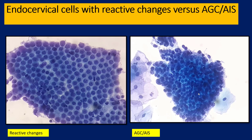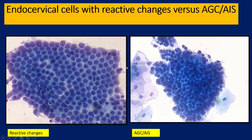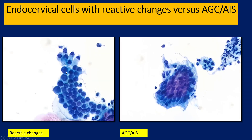Over here, even with this degree of anisonucleosis, the cells are still arranged in a pretty much monolayered kind of sheet with minimum overlap and not much derangement of polarity — so this is reactive change. Over here, the nuclei have become elongated, there is a degree of overlap, and a kind of pseudostratification pattern — so even with this degree of anisonucleosis, it is not reactive. I'm going to call it AGC, AIS, or the like. This is abnormal.